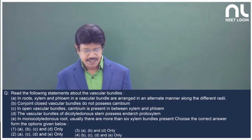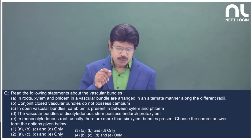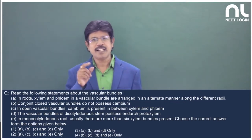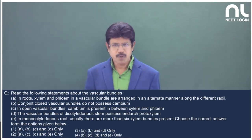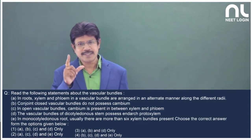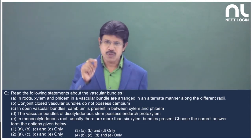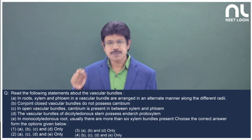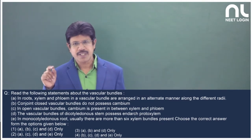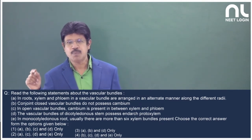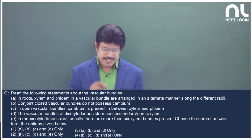In option B: conjoint closed vascular bundle does not possess cambium. Yes, in between the xylem and phloem there is no cambium. The vascular bundle is described as collateral, conjoint, closed, and it is present in monocot stem, dicot leaf, as well as monocot leaf.